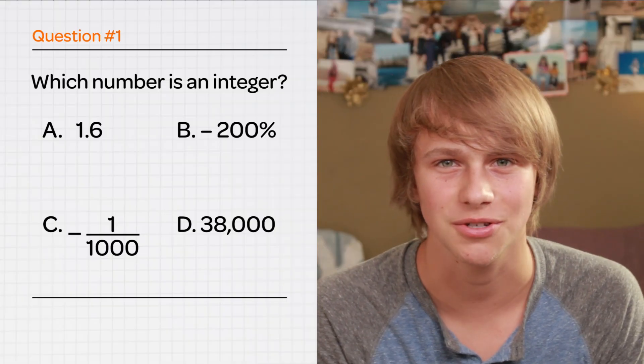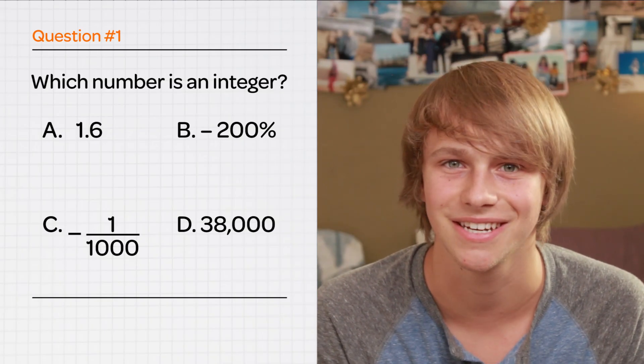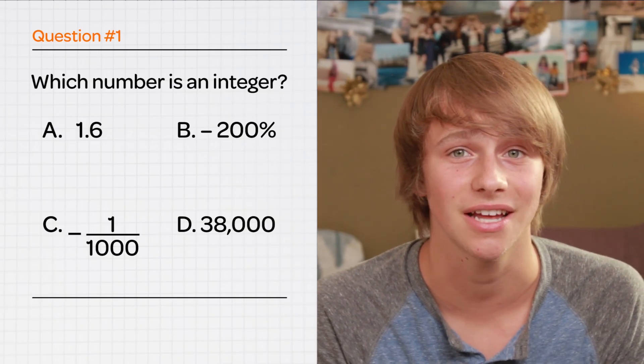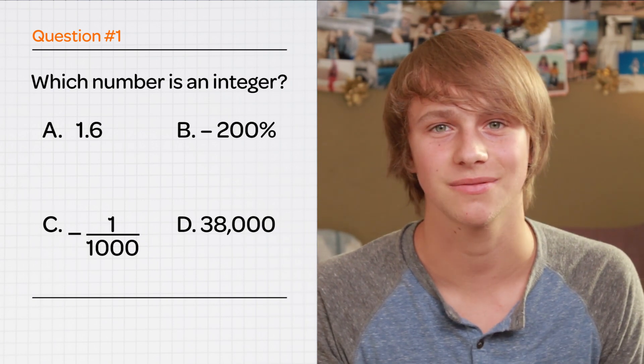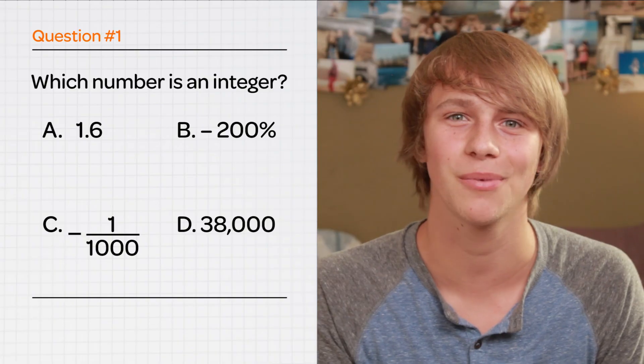Let's start off with a couple of questions from the last episode. Which of these numbers is an integer? 1 and 6 tenths, negative 200%, negative 1,000th, or 38,000? If you get it right, see you at Epic Rap Battles of History.